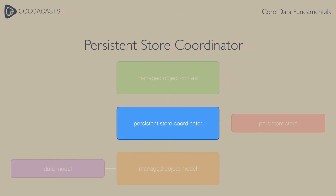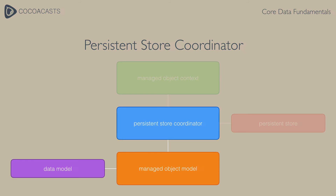The heart of a Core Data application is the persistent store coordinator. The persistent store coordinator is instantiated first when the Core Data stack is created. But to create a persistent store coordinator, a managed object model is required — the persistent store coordinator needs to know what the data schema of the application looks like. After setting up the persistent store coordinator and the managed object model, the workhorse of the Core Data stack is initialized: the managed object context.